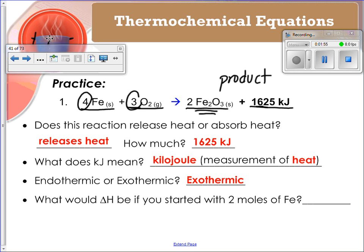And then it says, what would the change in H be if you started with two moles of iron? And remember, this is our energy gained or lost in the reaction, if you started with two moles of iron. And up here, we started with four.